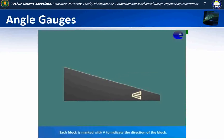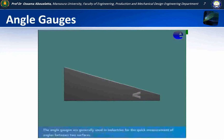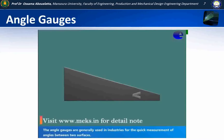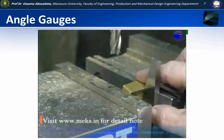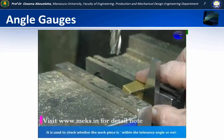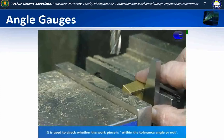Each block is marked with a V to indicate the direction of the block. Angle gauges are generally used in industries for the quick measurement of angles between two surfaces. It is used to check whether the workpiece is within the tolerance angle or not.